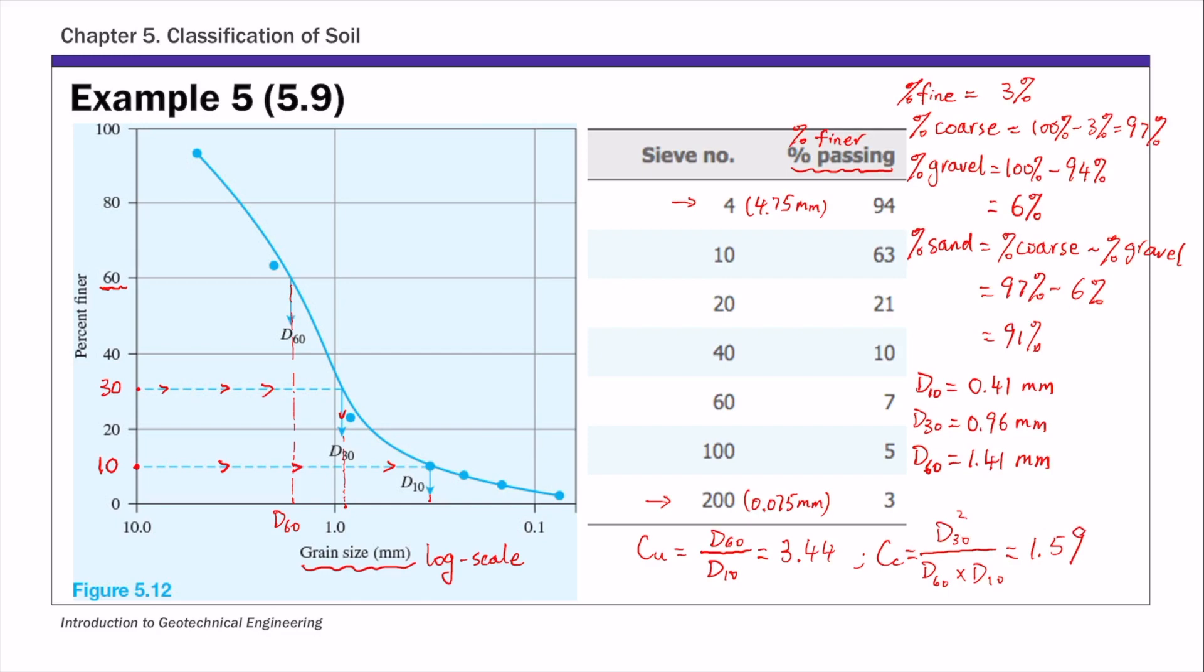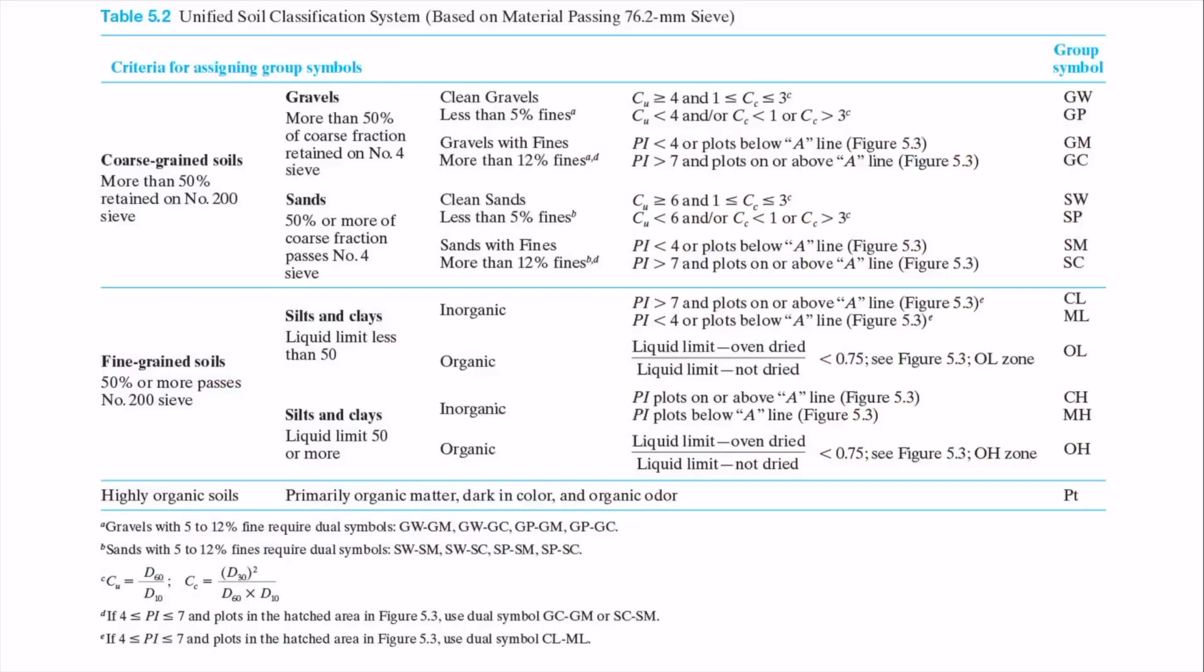With this information, we're going to use table 5.2 to find the group symbol. We enter from the left, and the percent of coarse is 97 percent, so this is going to be a coarse-grained soil - more than 50 percent retained on or above number 200. Percent of gravel is 6 percent, percent of sand is 91 percent. So we have more sands than gravel, so we're going to take this route here, sands.